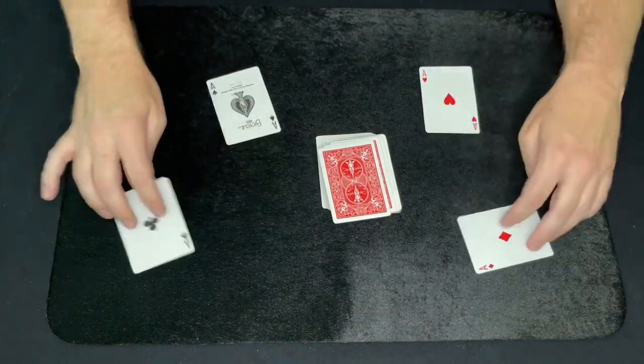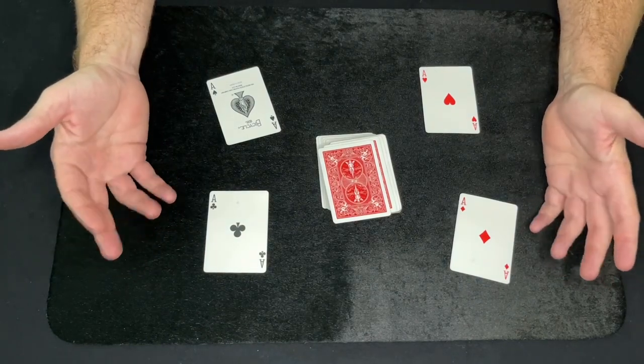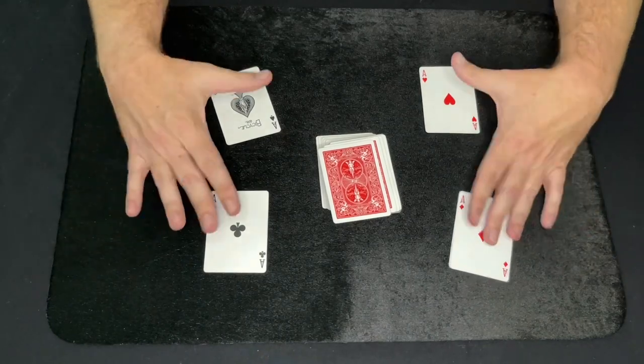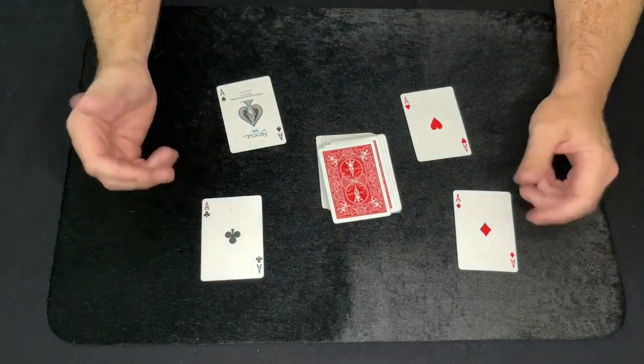And that's double discovery, and that's really easy to do, and it's a really neat, impressive kind of opening trick to find four cards, especially if you're going to use four aces for a different trick, like color-changing aces.